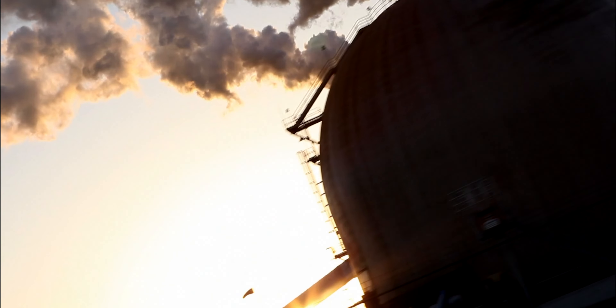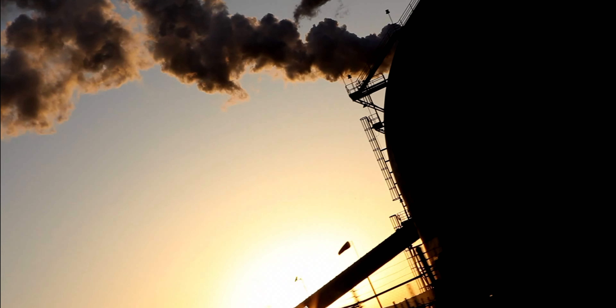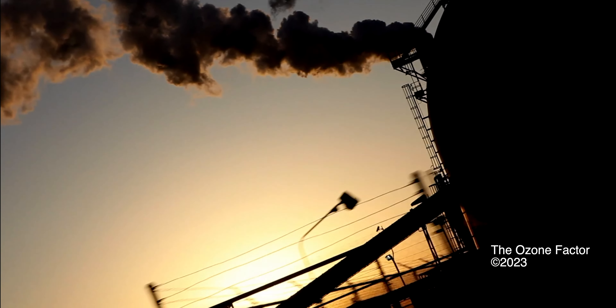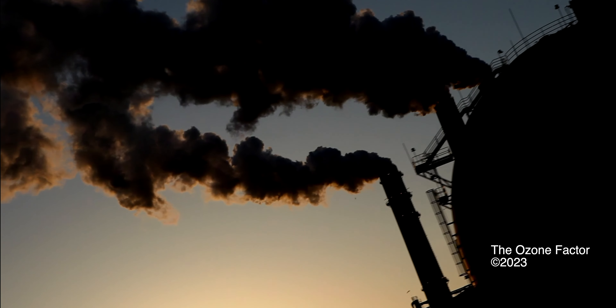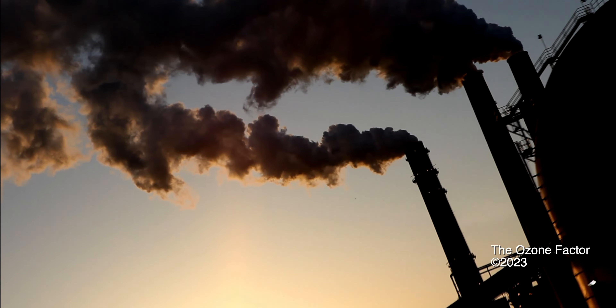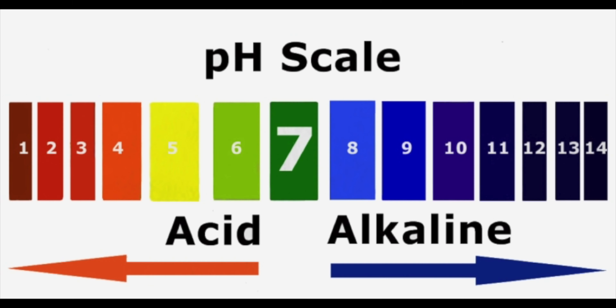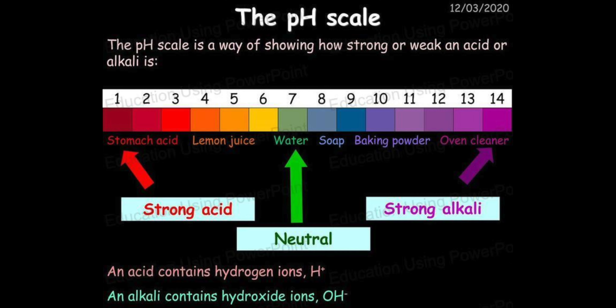Acid rain has been recorded with an acidity equal to strong vinegar — around a little less than pH 3. The pH scale goes from 0 to 14, and neutral is pH 7.